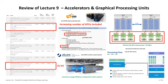Lecture 9 was on graphical processing units and, more broadly, accelerators. If you look at the top 500 supercomputers today, you see a significant impact of GPUs. The Summit system, which we discussed, has even six GPUs per node, which is a very significant amount compared to many other systems. It shows that the impact of GPUs has really helped get systems very high up in the top 500.